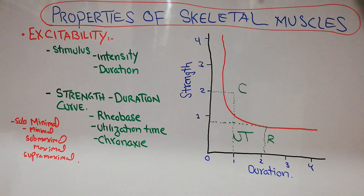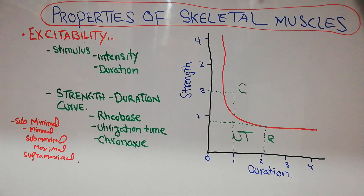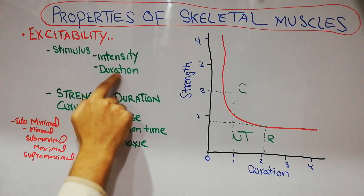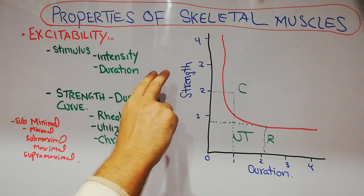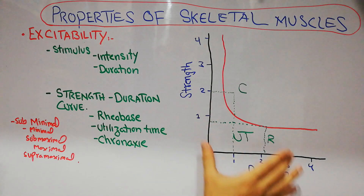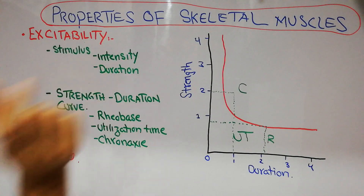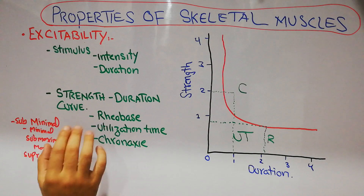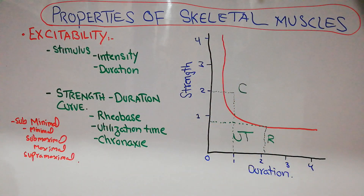So excitability of a skeletal muscle is its ability to respond to a stimulus, which could be chemical, electrical, or thermal. The stimulus has two important characteristics: its intensity and its duration. When we plot the excitability of the muscle and compare its strength with its duration, the curve that correlates strength and duration is known as the strength-duration curve.